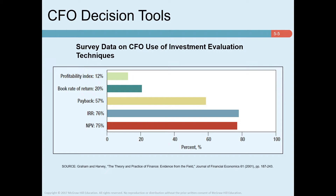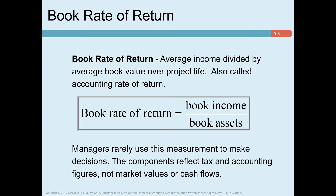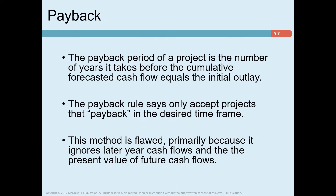Next, we look at CFO decision tools. The CFO essentially uses four methods: NPV, IRR, payback period, and book rate of return. Book rate of return is less popular — it's basically net income over book assets, essentially a return on assets, almost like return on investment. That can feed into the DuPont model, but that's not what we're doing here, as we're taking a more financial perspective.